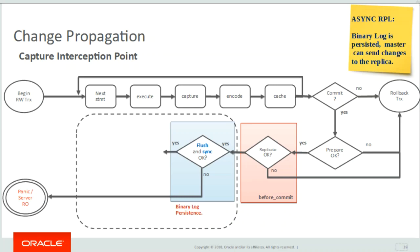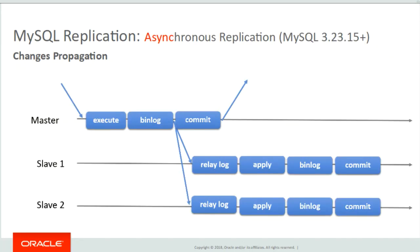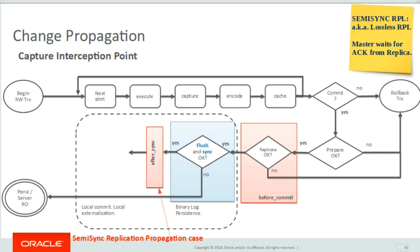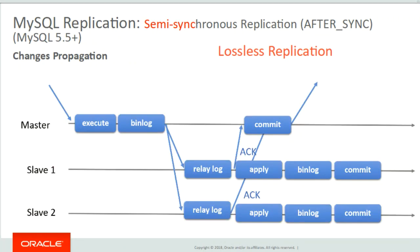In the flush stage, the transaction cache is flushed to the binary log buffer. In the sync stage, the fsync call is executed and the binary log buffer is written to disk, making changes persistent. If not OK, depending upon bin log error action settings, the server can abort or become read-only. If everything is OK, since the binary log is persisted, asynchronous replication can do change propagation to replicas from here and proceeds to the commit stage. If semi-synchronous after-sync is in use, the master takes the after-sync hook and waits for acknowledgement from the replica.